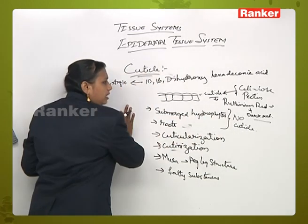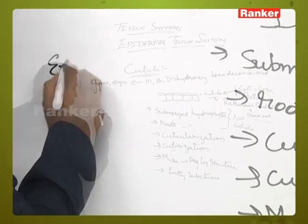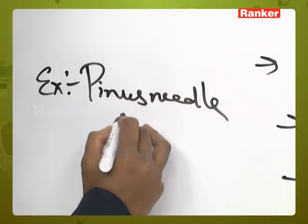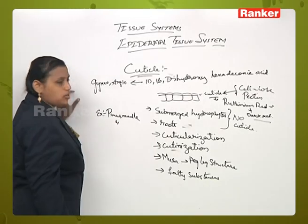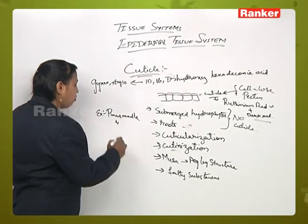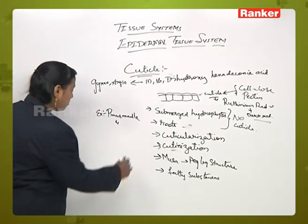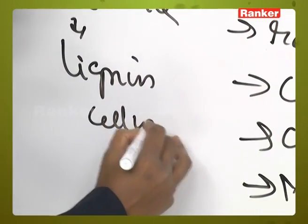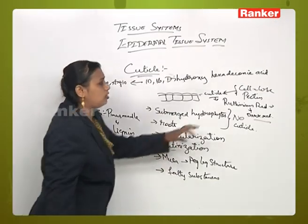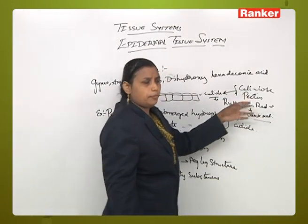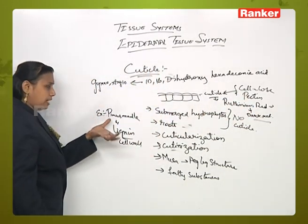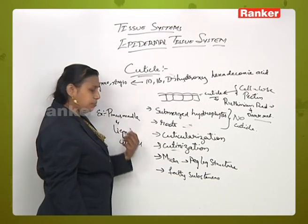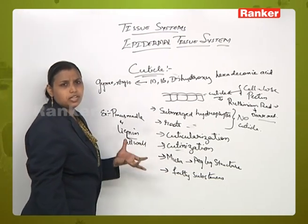In addition to that, in the case of Pinus needle, we will see the deposition of lignin in the cell wall. Normally the cell wall is made up of cellulose and pectin, but in the case of Pinus needle, we can clearly see the presence of lignin deposition on the cell wall.